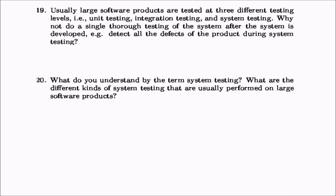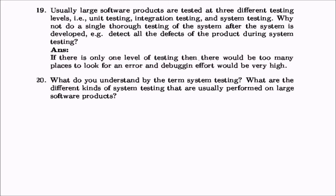Why are large software products tested at three levels — unit, integration, and system testing — rather than doing a single thorough system test? If there were only one level of testing, there would be too many places to look for errors and debugging effort would be very high. Unit, integration, and system testing each offer different kinds of error detection, and all these errors cannot be easily found through one thorough test.